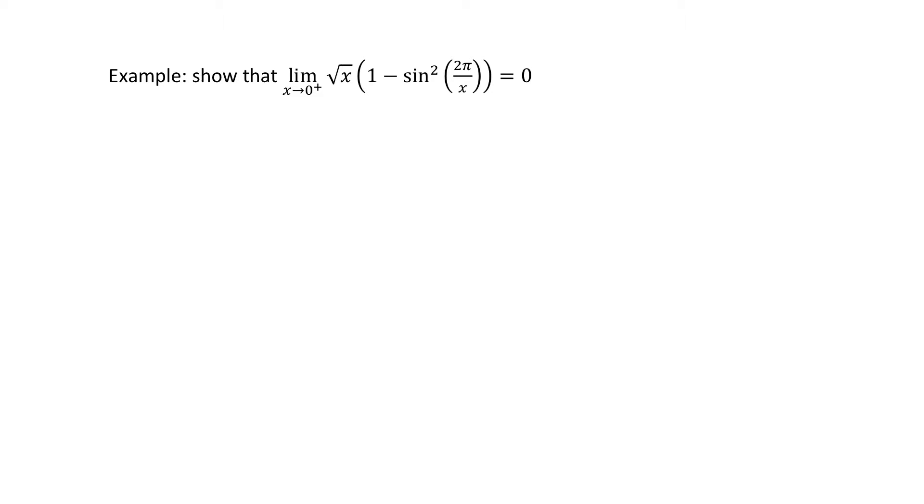And the first thing we're going to want to note is the following: this inside part, 1 - sin²θ, let's just put it as theta for right now. That actually looks like something we might know. If we remember back from our identities, 1 - sin²θ is equal to cos²θ.